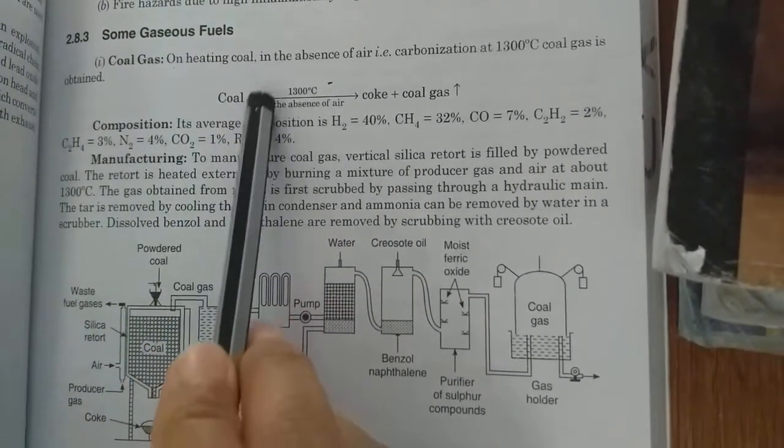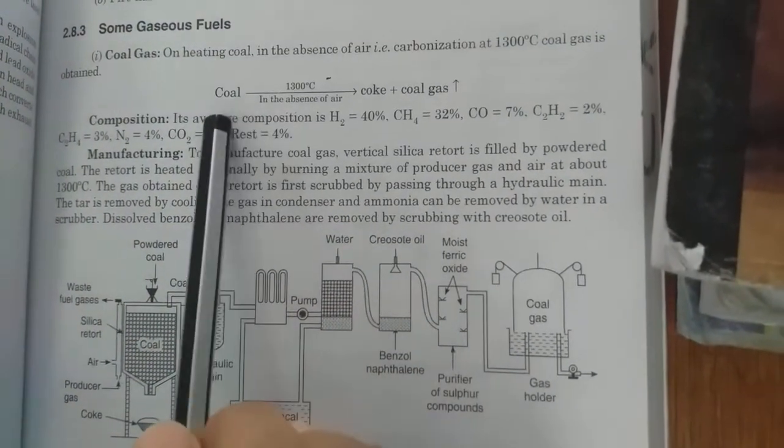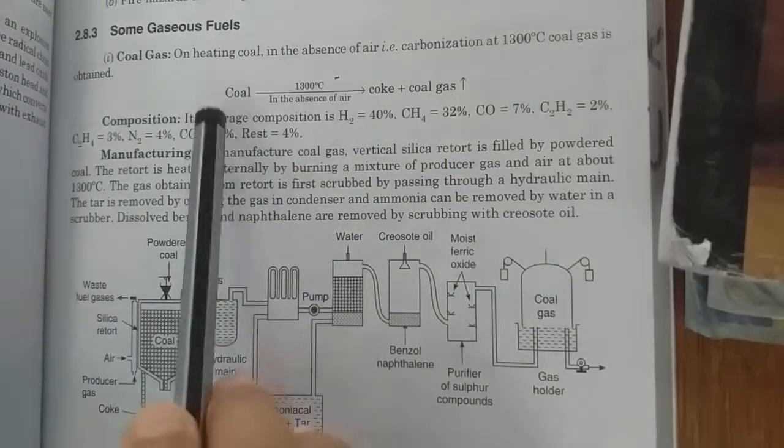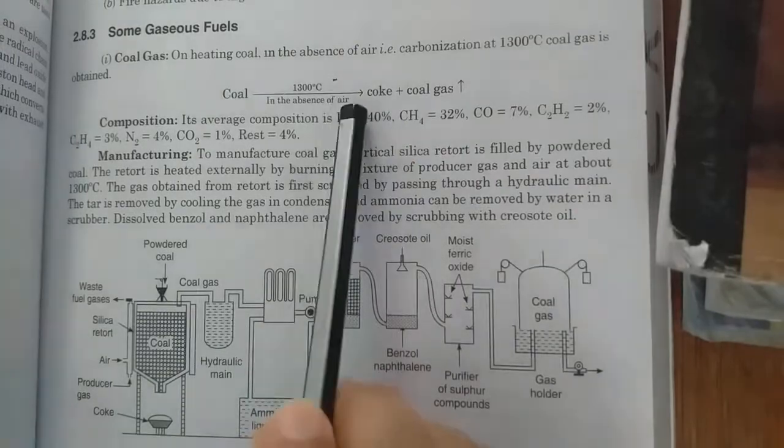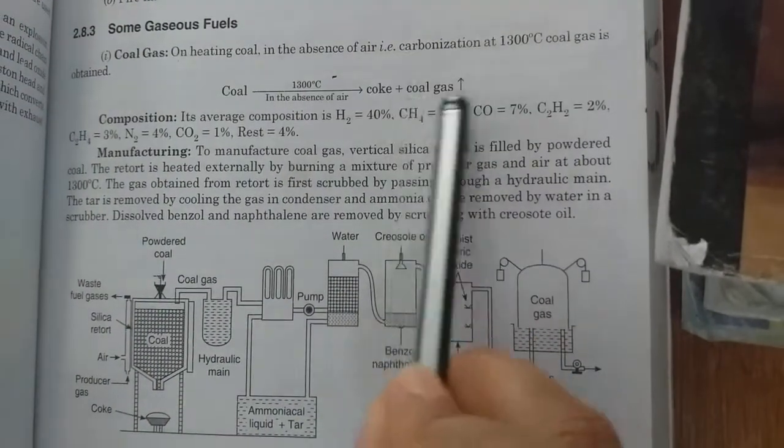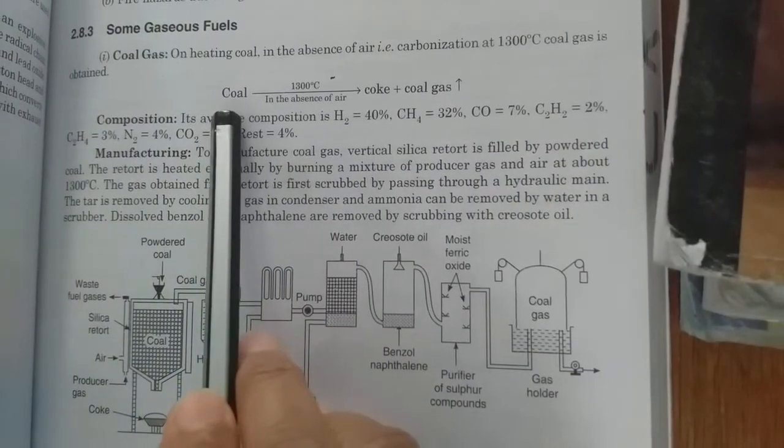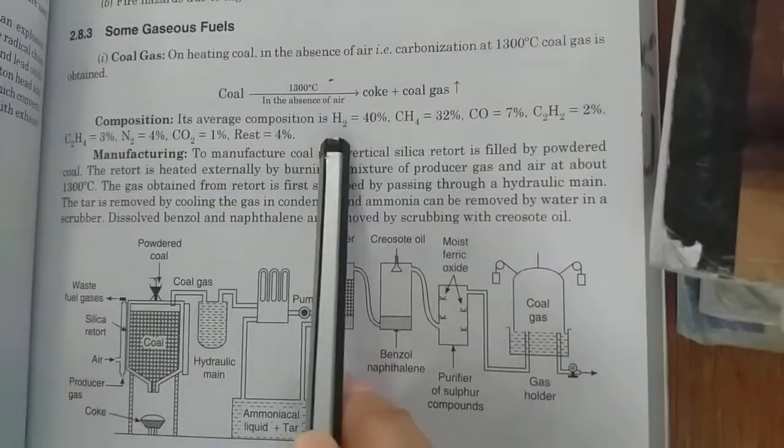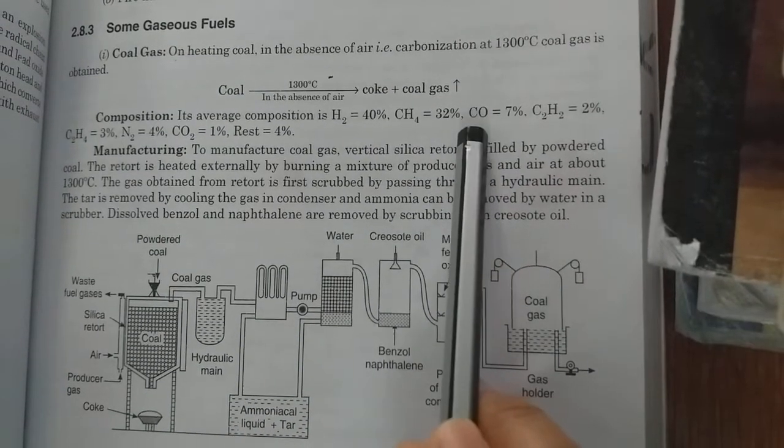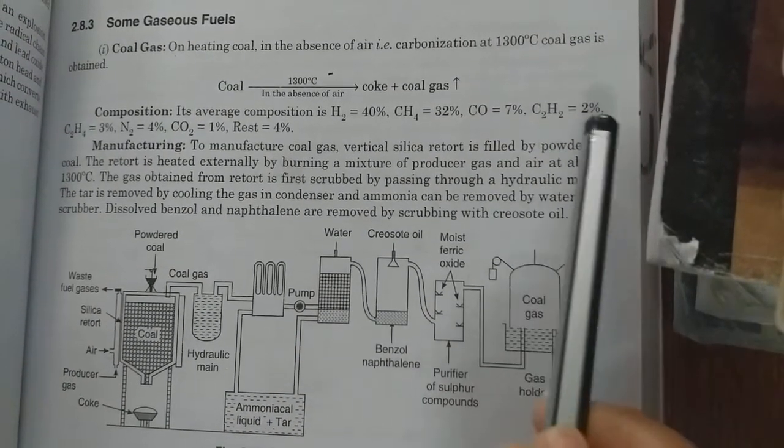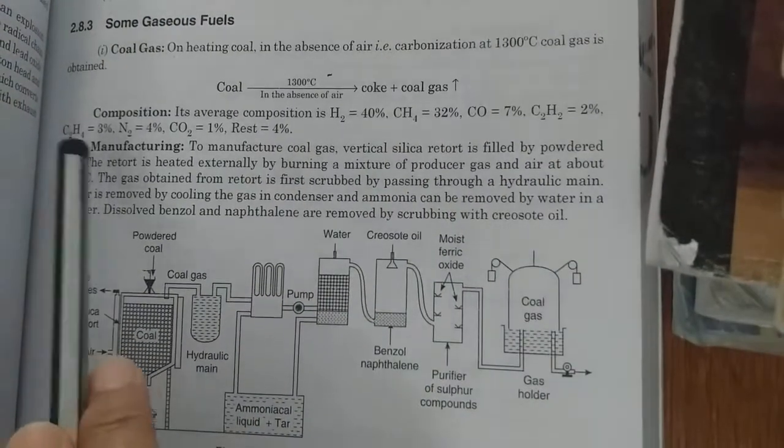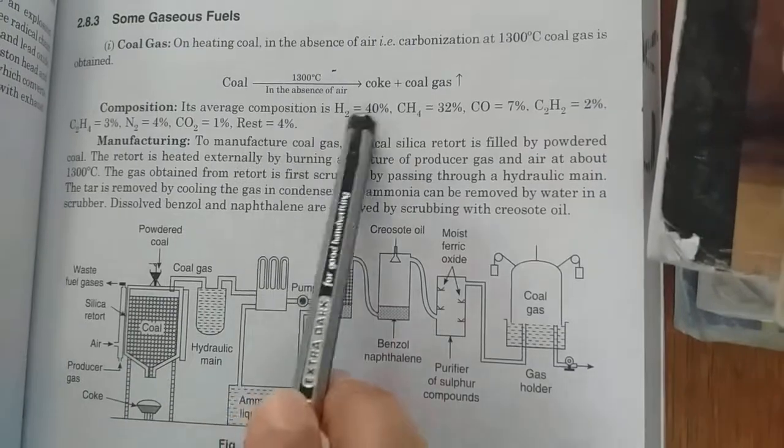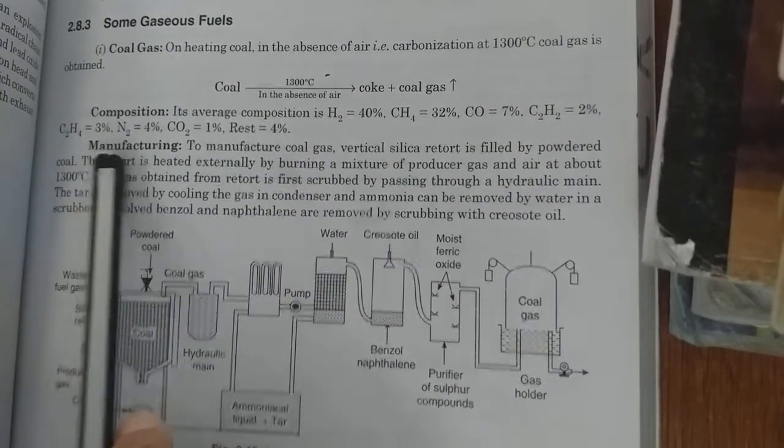Now we will discuss some gaseous fuels. First example is coal gas, which we already discussed in the Otto Hoffman process. Coal gas is prepared by destructive distillation of coal. In the absence of air, when we heat the coal at temperature 1300 degree centigrade, coal is converted into coke. This process is called carbonization. The composition of coal gas is: hydrogen 50%, methane 32%, carbon monoxide 7%, ethylene 2%, ethane 3%, nitrogen 4%, carbon dioxide 1%, and rest is other components.